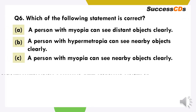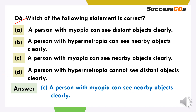The next question asks which statement is correct. The options are: a person with myopia can see distant objects clearly; a person with hypermetropia can see nearby objects clearly; a person with myopia can see nearby objects clearly; or a person with hypermetropia cannot see distant objects clearly. The correct option is C — myopia ka disorder rakhne wala insaan nearby objects ko clearly dekh pata hai, but far away objects ko unclearly dekh pata hai.